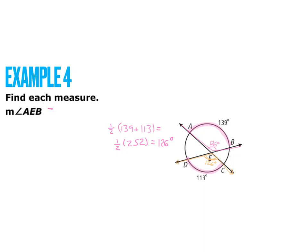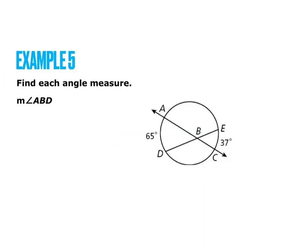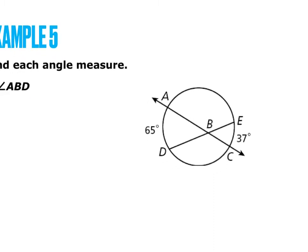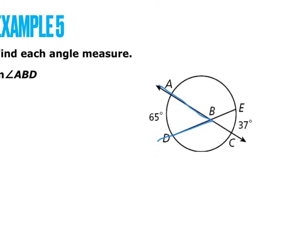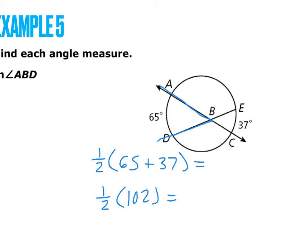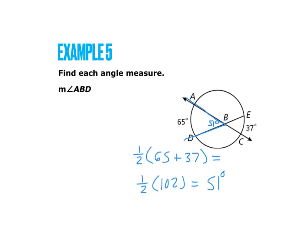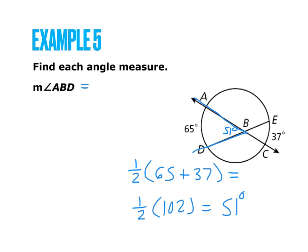We add the two intercepted arcs together and divide by 2, or multiply by one half — it's the same thing. We have 65 plus 37, which is 102. 102 times one half is 51 degrees. So the measure of angle ABD is 51 degrees.